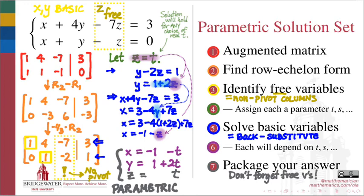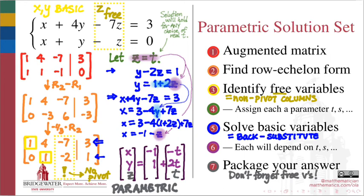If, in addition, we wish to express the solution set in a parametric vector expression, all we need to do from here is to package our three quantities together into single vectors. So x, y, and z will become a vector, the constants on the right-hand side will become a vector, and the variable terms on the right-hand side that include the parameters will become a vector as well. Filling in any missing entries and factoring out the parameter gives us what we typically call the parametric vector expression for the solution set.